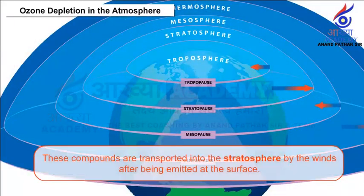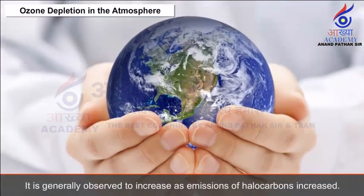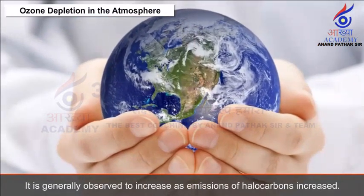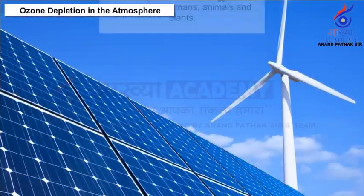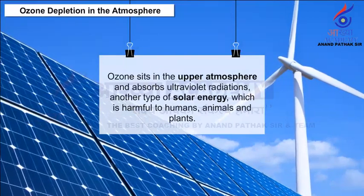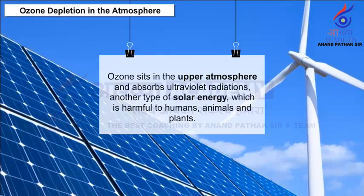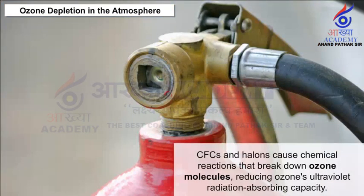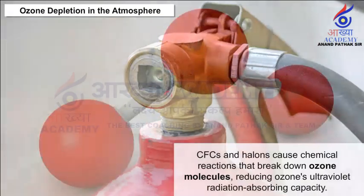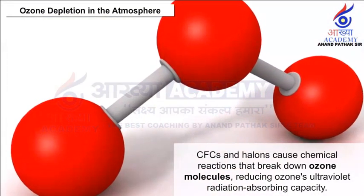These compounds are transported into the stratosphere by winds after being emitted at the surface. Ozone depletion is generally observed to increase as emissions of halocarbons increase. Ozone sits in the upper atmosphere and absorbs ultraviolet radiation, a type of solar energy which is harmful to humans, animals and plants. CFCs and halons cause chemical reactions that break down ozone molecules, reducing ozone's ultraviolet radiation absorbing capacity.